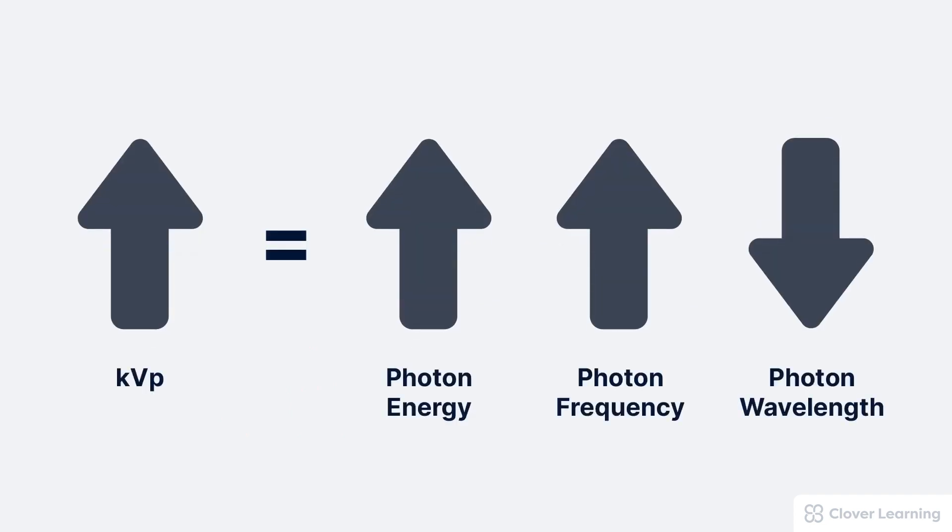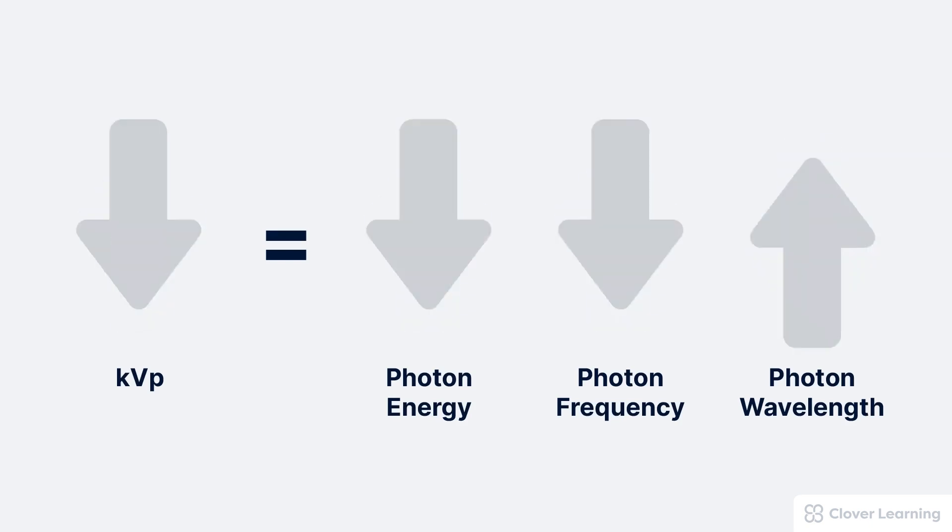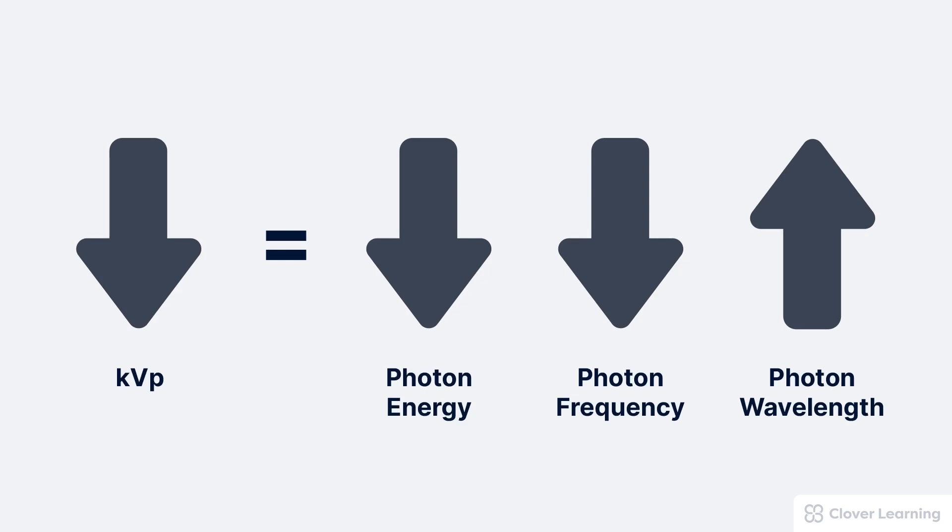For example, if we increase the KVP, this results in increased photon energy, increased photon frequency, and decreased photon wavelength. The opposite is also true. If we decrease the KVP, this results in decreased photon energy, decreased photon frequency, and an increase in the wavelength of photons.